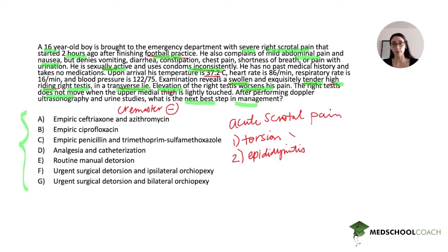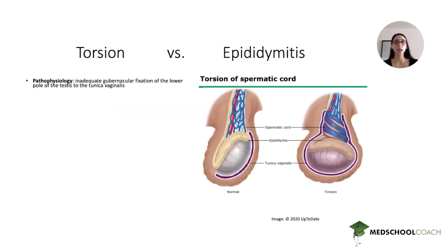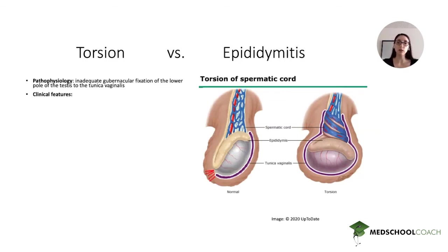These are must-know diagnoses for your Step 2 CK exam and your Peds shelf — you can almost guarantee you'll get a question on one of these two. For testicular torsion, the pathophysiology is inadequate fixation of the gubernaculum to the lower pole of the testis at the tunica vaginalis. Because the lower pole of the testis is not appropriately fixed, it's prone to torsion. Clinical features include acute onset scrotal pain, profound testicular swelling, and diffuse tenderness throughout the entire testis.